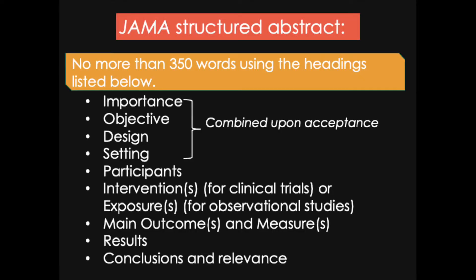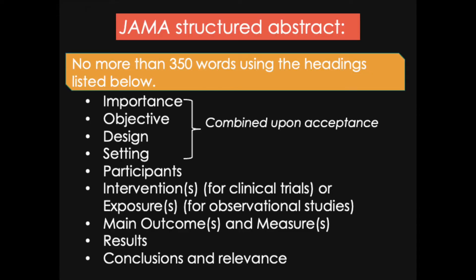Let's look at one more example of a structured abstract — this one is from JAMA, the Journal of the American Medical Association. This one allows 350 words and asks you to use subheadings, whereas New Phytologist asked for bullet points. The subheadings would be: importance, objective, design, setting — which will all be combined under one subheading if the paper is accepted — and also participants, interventions for clinical trials or exposure for observational studies, main outcomes and measures, results, and conclusions and relevance.